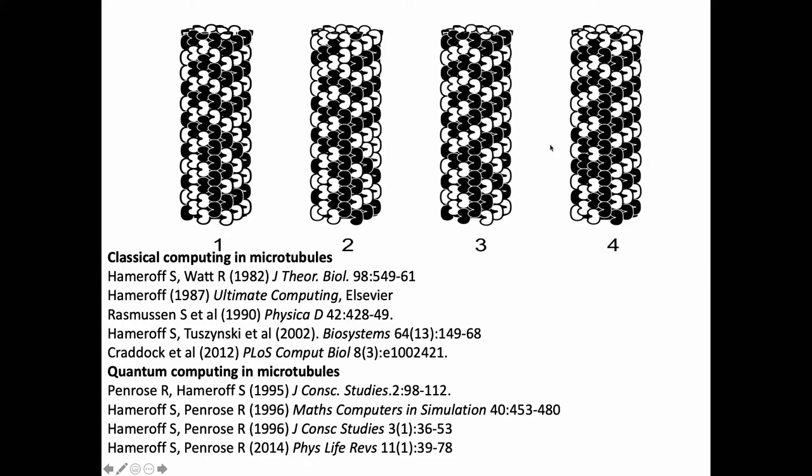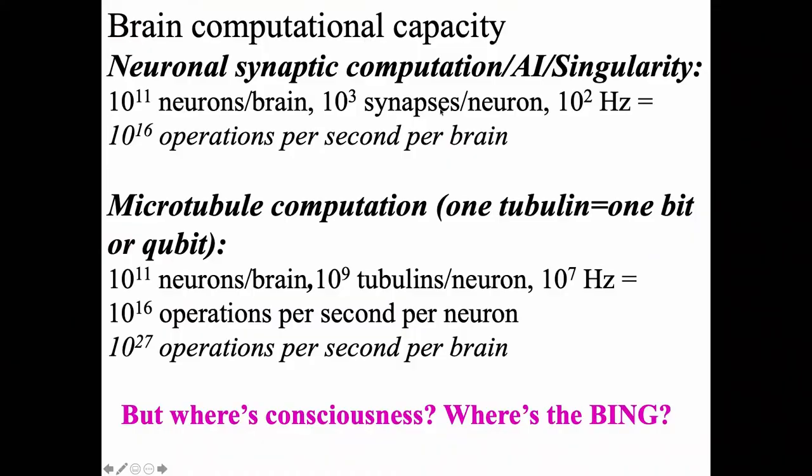You're going to see a sequence of one of our models of information moving through microtubules. One thing this would do is increase the capacity of information processing in the brain tremendously. The standard AI singularity approach: a hundred billion neurons, a thousand synapses per neuron, about a hundred hertz — 10 to the 16th operations per second per brain. Kurzweil said many times that give us a computer with 10 to the 16th ops per second, and we'll have brain equivalents and therefore consciousness. Well, it hasn't happened.